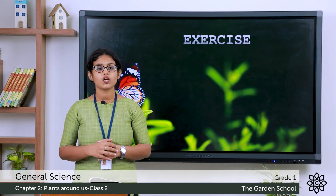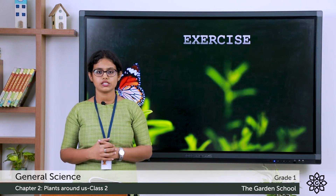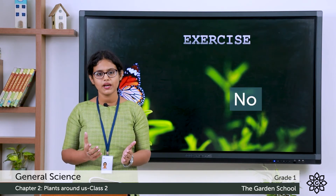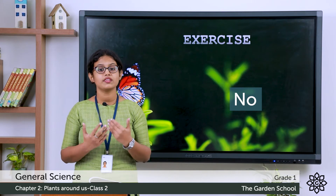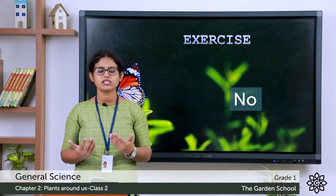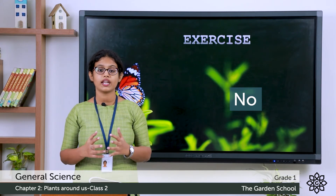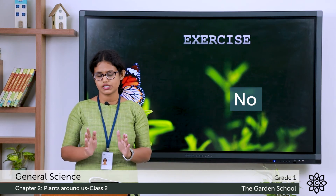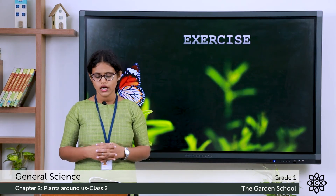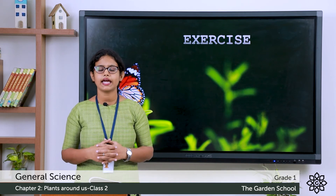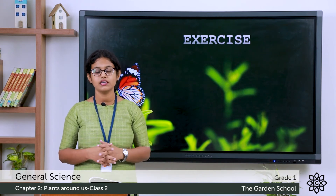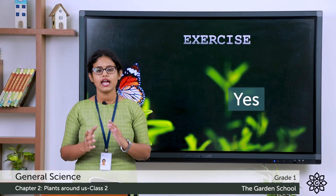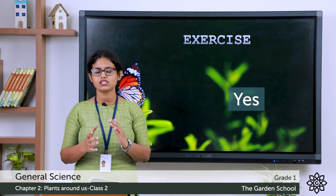Fourth question: do plants need air and sunlight? The answer is yes. Plants need air, water and sunlight to live.